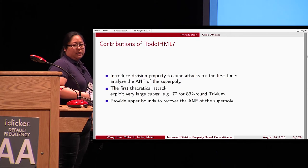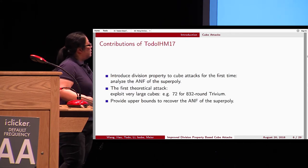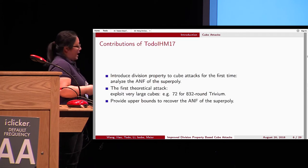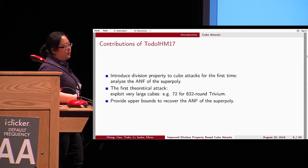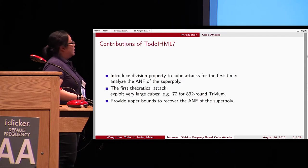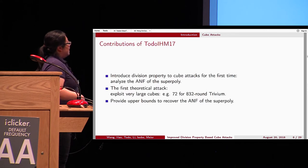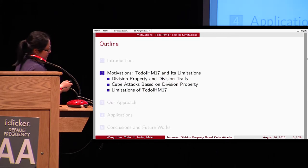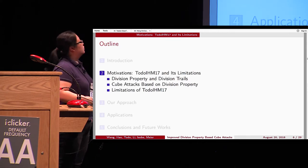In 2017, Toto et al. introduced, for the first time, the division property to the cube attack. They analyzed the ANF of the superpoly and for the first time gave theoretical results where they can try very large cubes. For example, for 832-round Trivium they tried cubes of size 72. They can also upper bound the complexity to recover the ANF of the superpoly.